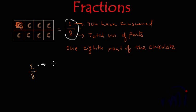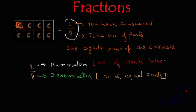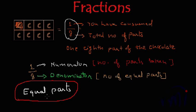The number written over the bar is called the numerator, and the number written below the bar is called the denominator. The denominator represents the number of equal parts, and the numerator represents the number of parts you have taken or are talking about. In fractions, you talk about a part of the whole, so the thing must be divided into equal parts. This is very important — when you are talking in fractions, the parts have to be equal.